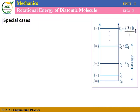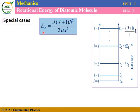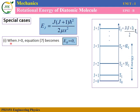As per equation number seven, the rotational kinetic energy E_J equals J(J+1) h-cross squared divided by 2 mu x squared, where J is the total angular momentum quantum number with values 0, 1, 2, 3 and so on. Special case: when J equals 0, E0 equals zero times one times h-cross squared divided by 2 mu x squared, which equals zero. So E0 equals zero.